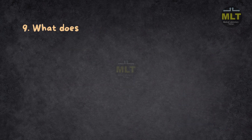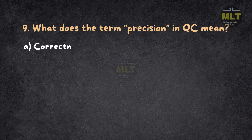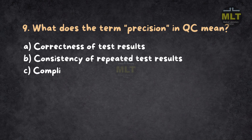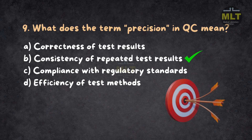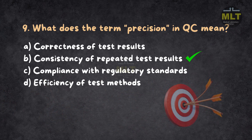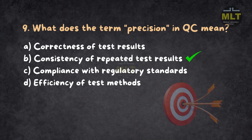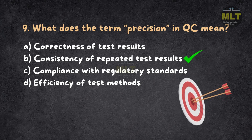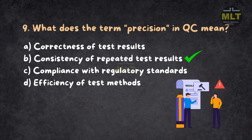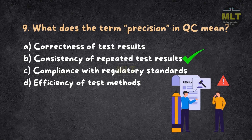Question 9: What does the term precision in QC mean? a. Correctness of test results. b. Consistency of repeated test results. c. Compliance with regulatory standards. d. Efficiency of test methods. Correct answer: b. Consistency of repeated test results. Precision refers to obtaining similar results when a test is repeated under the same conditions. It does not guarantee correctness or accuracy, but indicates reliability. Regulatory compliance and efficiency are broader aspects of lab operations.